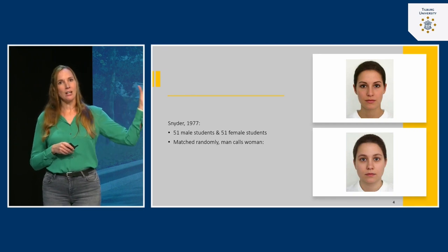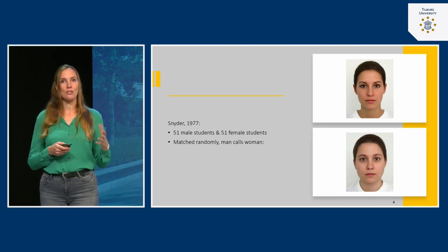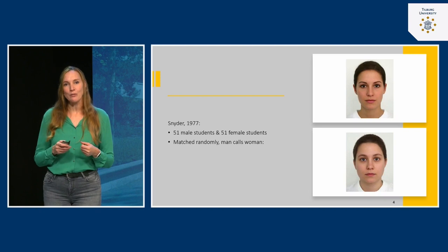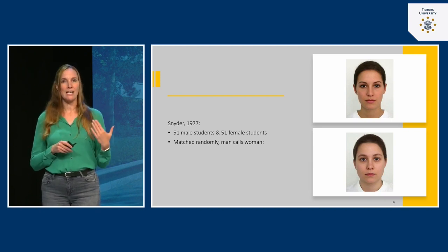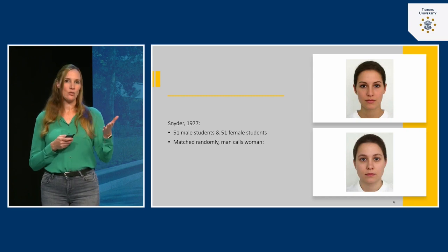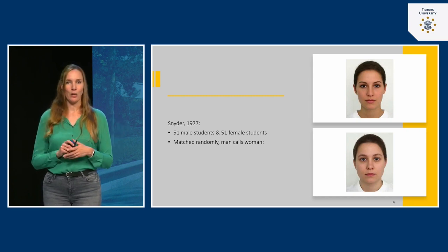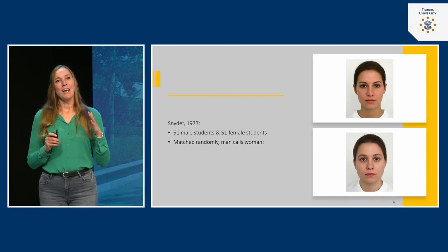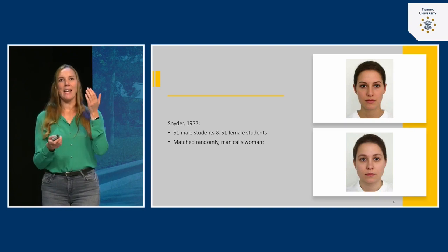The pictures shown on screen now are not of real participants — they are computer-animated pictures, not used by Snyder in 1977. The rules of attractiveness were used to make these faces either more or less attractive, while keeping other characteristics constant, like hair, t-shirt, background, and skin. So there was this match: the male called the female, and the only thing that differed was the picture he saw beforehand.